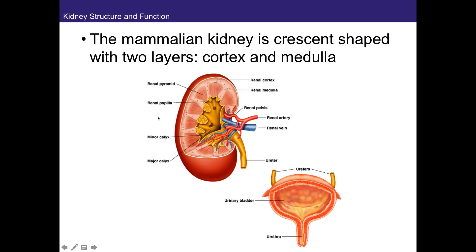The renal papilla is where the tip of the medullary region and the minor calyx meet. As for the difference between the renal pyramid and the renal medulla — there's really no difference. The renal pyramid is just the darker region that looks like a pyramid, but it is the medullary region. It looks like an upside-down candy corn. It's called the renal pyramid, but it's really the medullary region.